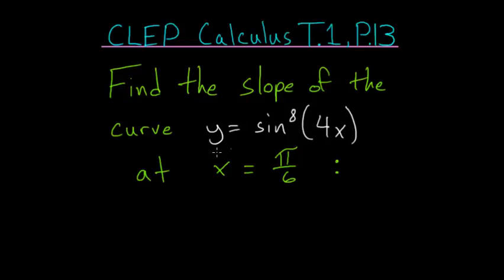Find the slope of the curve y equals sine of 4x all raised to the 8th power at x equals pi over 6.